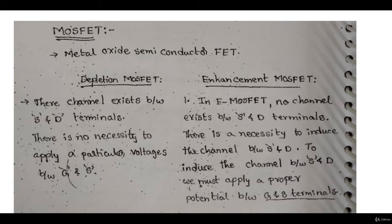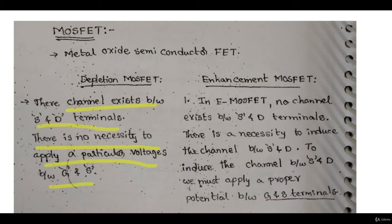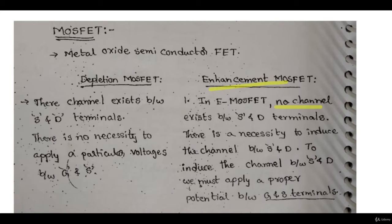In a depletion type MOSFET, the channel already exists — the manufacturer makes the channel and it is available to the user. The channel is already made between the source and drain terminals, so there is no necessity to apply a particular VGS voltage to create a channel.